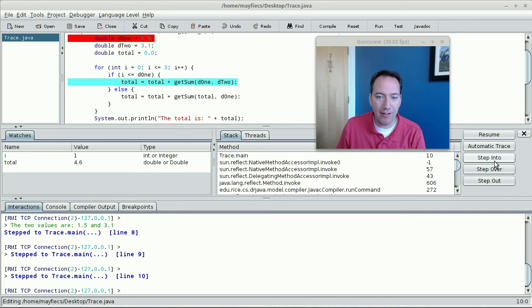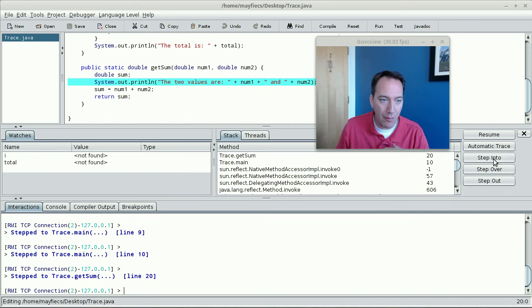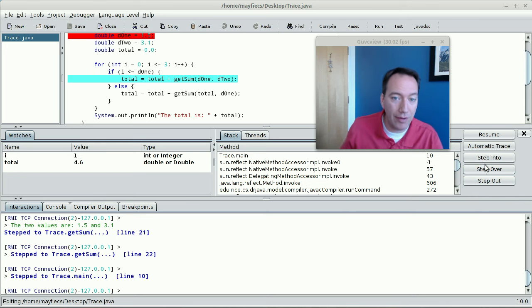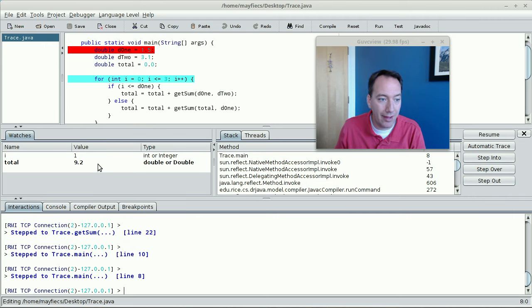In contrast, if I say step into, that will go into any methods that are invoked on that line of code. Right? So now I can step through the behavior of getSum. Of course, i and total are not found anymore because they're not part of this method stack frame. So let me go ahead and step over these lines of code and see what happens. Of course, now when I return from that method back to this line, you can see the value was 1 and 4.6. But when I step over that line, it now changes the value to 9.2, which was getSum plus the previous total.